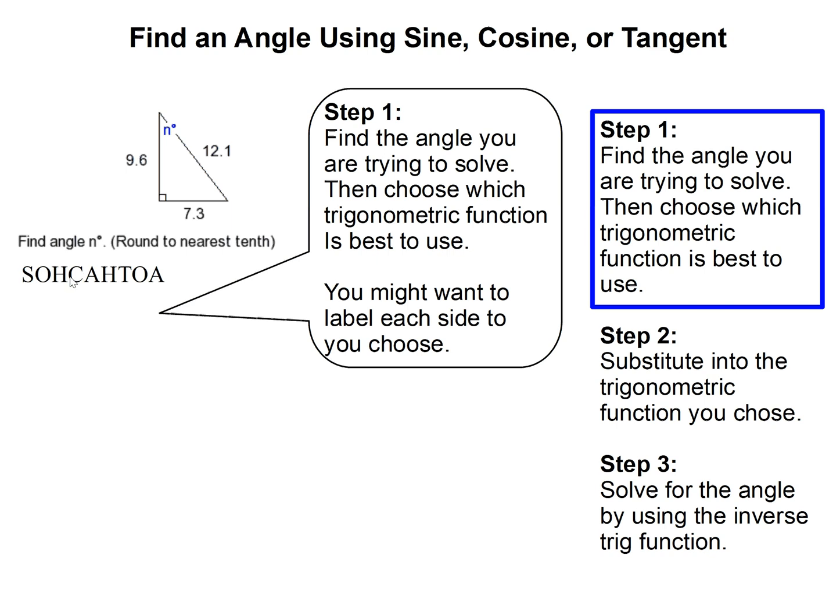If we look at sine, this is the angle, so the sine of the angle would be the opposite over the hypotenuse: 7.3 over 12.1. The cosine of this angle would be the adjacent side over the hypotenuse, and the tangent of this angle would be the opposite over the adjacent.